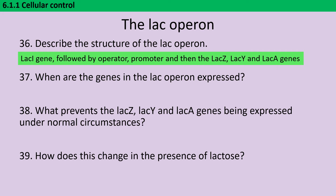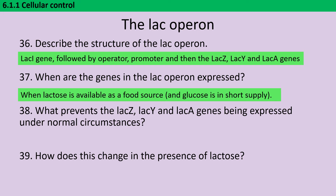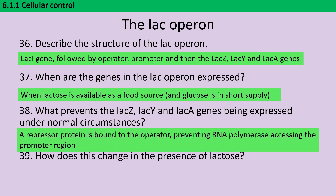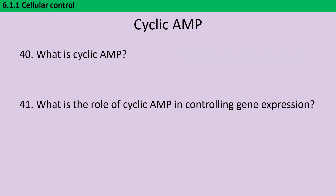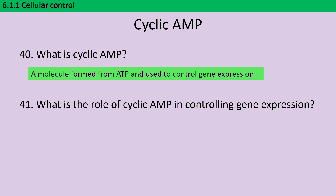The genes in the lac operon are expressed when lactose is available but glucose is in short supply. Normally they're not expressed because there's a repressor protein bound to the operator, which stops RNA polymerase from accessing the promoter region. When lactose is available, this inhibits the repressor protein so it unbinds, making the promoter available so RNA polymerase can bind. Cyclic AMP is made out of ATP and is used to control gene expression — it forms a complex with CRP (cyclic AMP receptor protein), which binds to the DNA, increasing the expression of these genes.